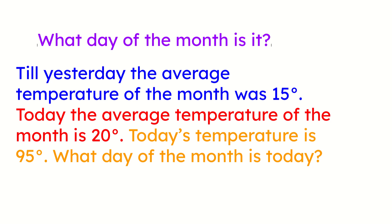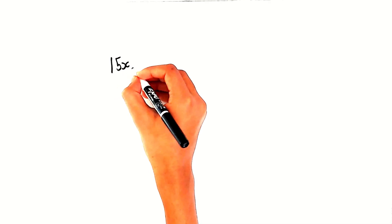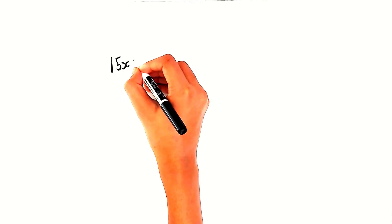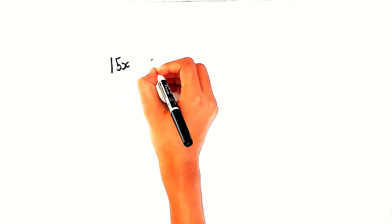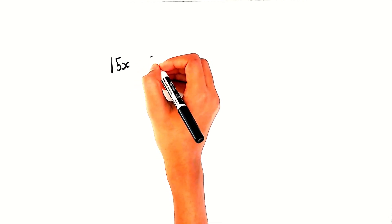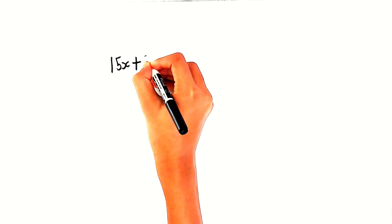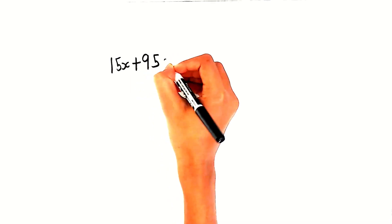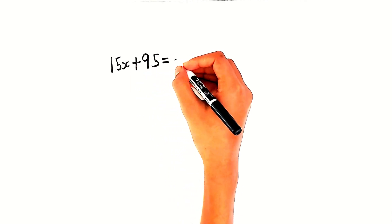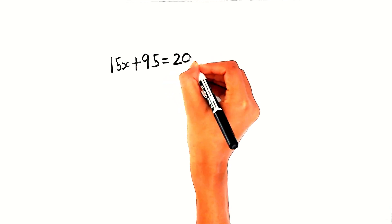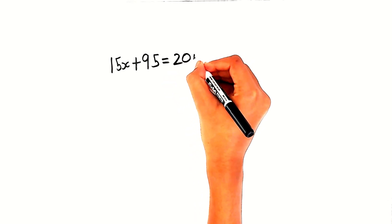So here the average temperature till yesterday was 15 degrees Celsius, but we don't know which day that yesterday was. So we can just put 15x. Now here the average temperature today is 20 degrees and today's temperature is 95. So if we do plus 95, it must equal 20. So it'll be 20. Now let's put 20y.